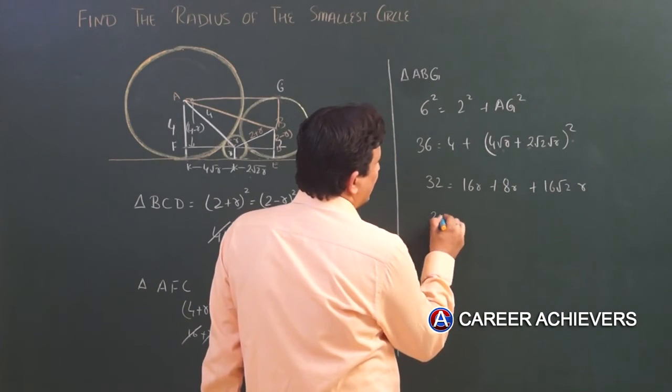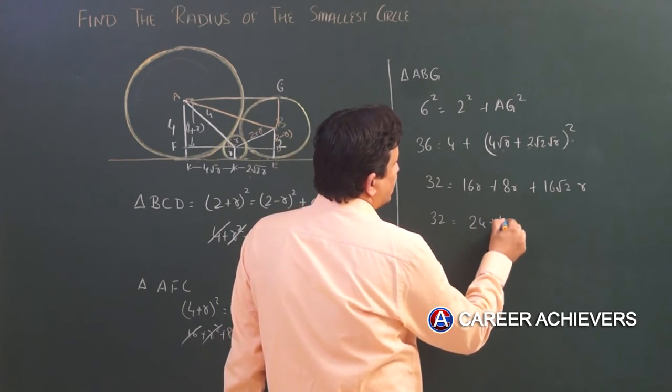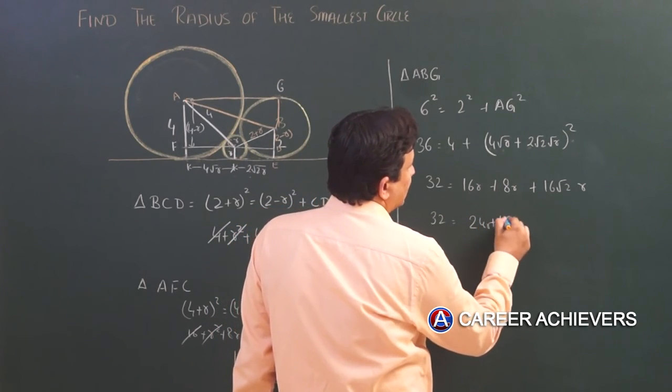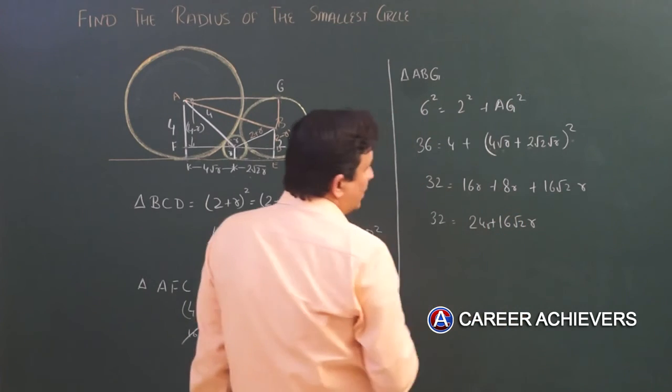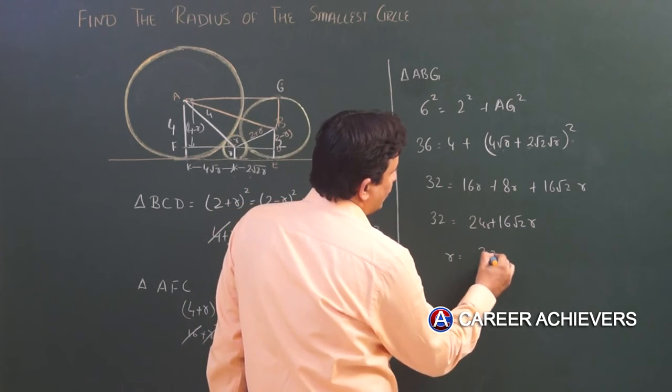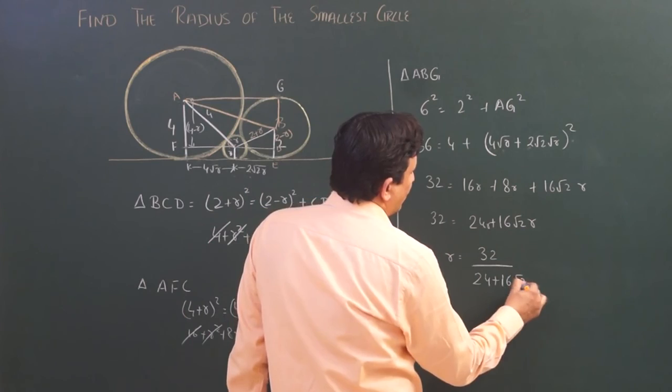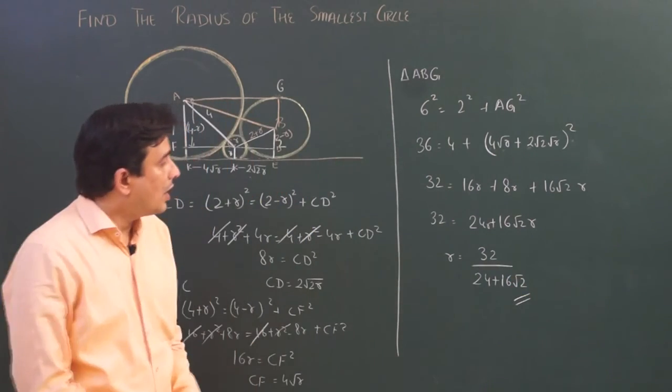Let's see what can be done. 32 equals 16 plus 8 is 24 plus 16√(2R). R equals 32 upon (24 + 16√2). This will be the value of R.